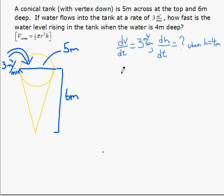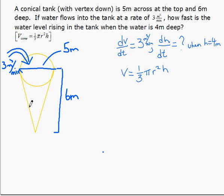The volume of a cone is one-third pi r squared times h. To solve this question, we need to relate the volume to the height, which this equation does. However, we have r here, and as the height changes, the radius of the cone also changes. So r is not constant.